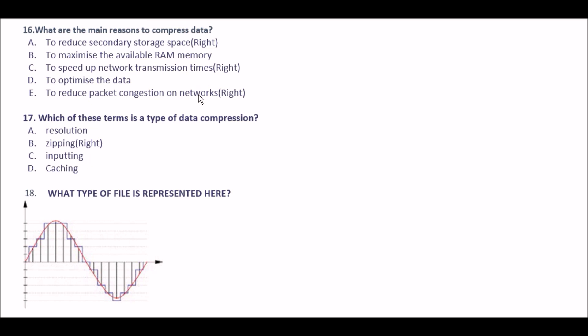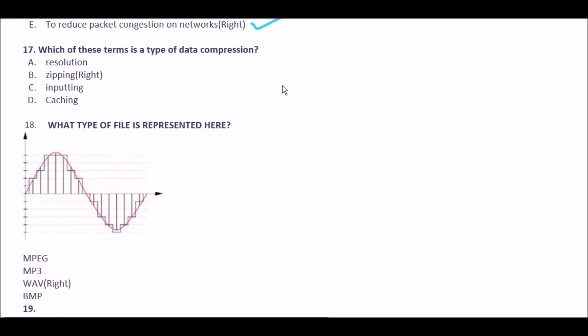Next question: what are the main reasons to compress data? Option A to reduce secondary storage space, option B to maximize available RAM memory, option C to speed up network transmission times, option D to optimize the data, option E to reduce packet congestion on network connections. Three answers are correct: option A (reduce secondary storage space), option C (speed up network transmission times), and option E (reduce packet congestion on network).